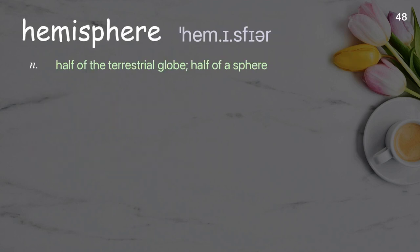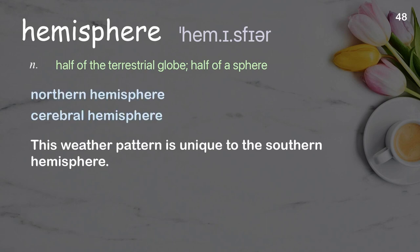Hemisphere: half of the terrestrial globe; half of a sphere. Examples: northern hemisphere, cerebral hemisphere. This weather pattern is unique to the southern hemisphere.